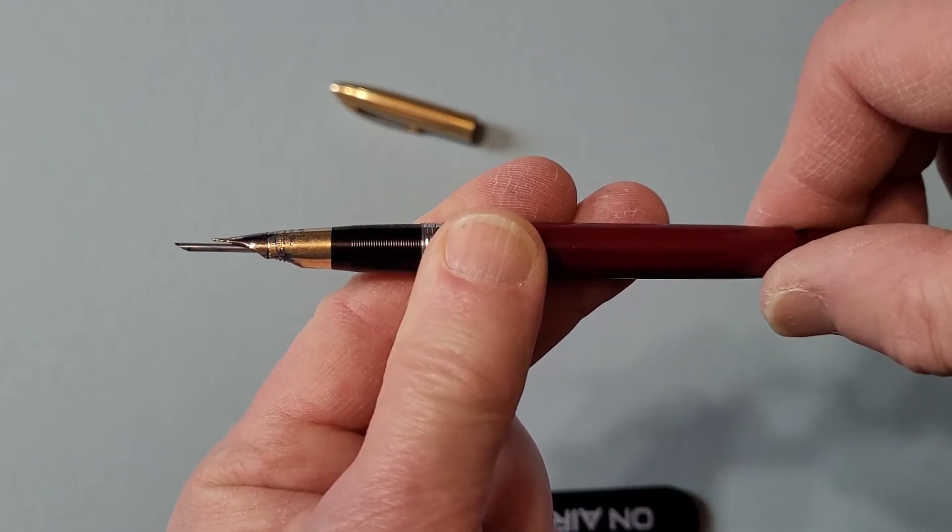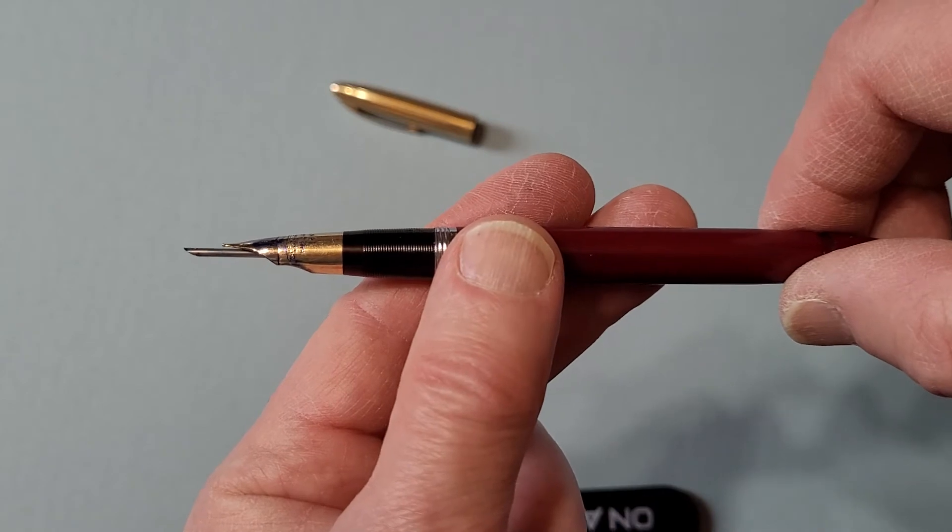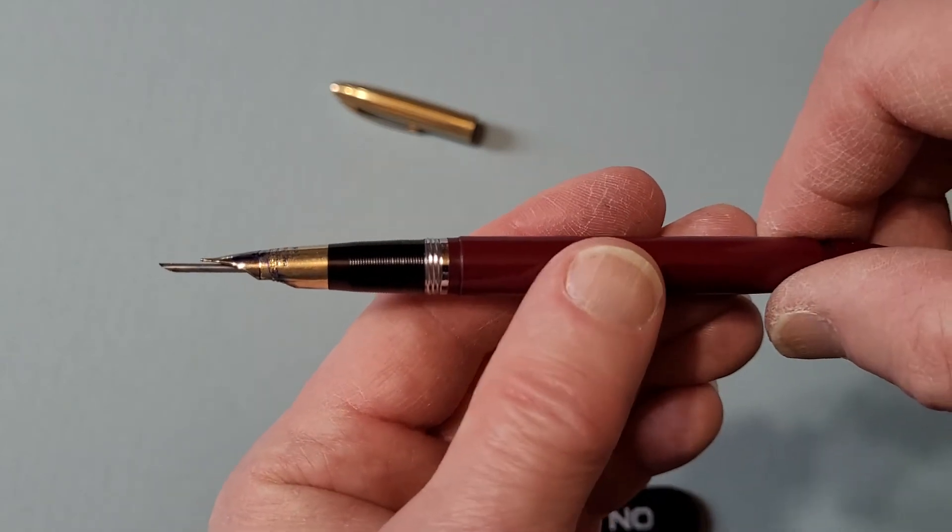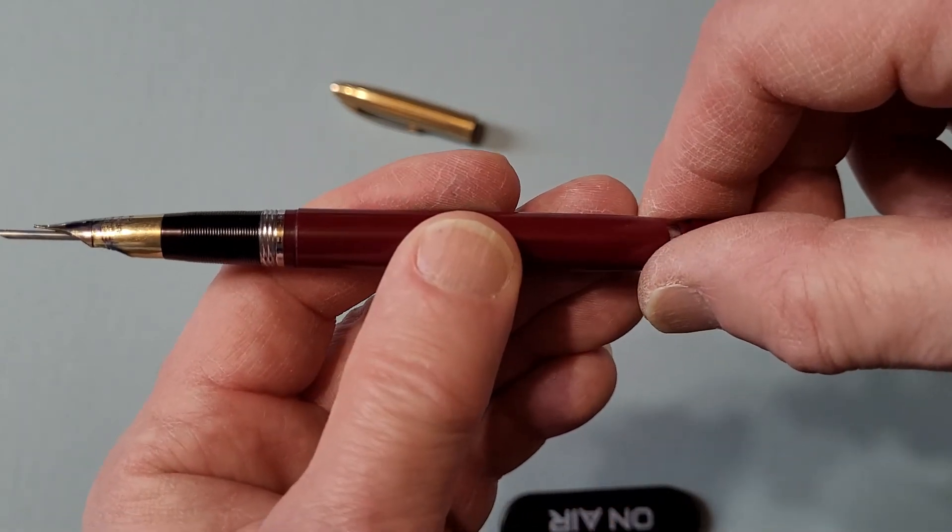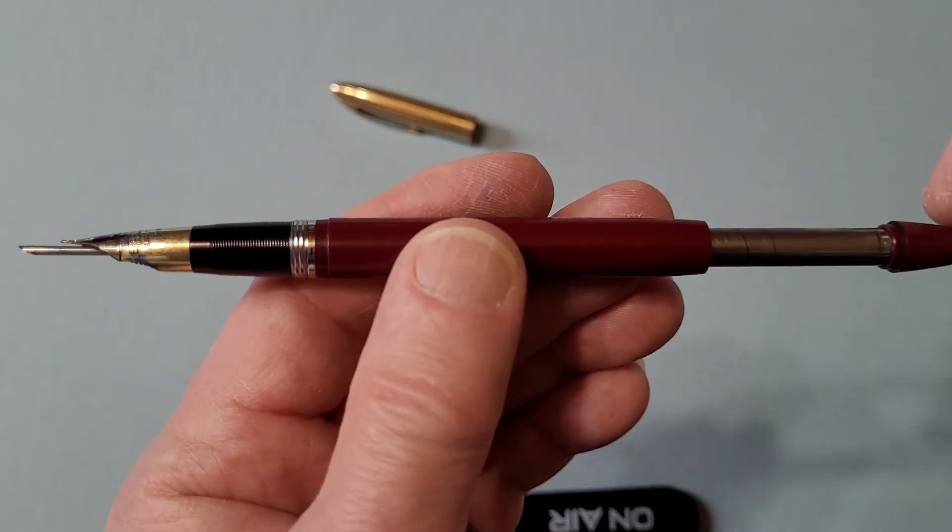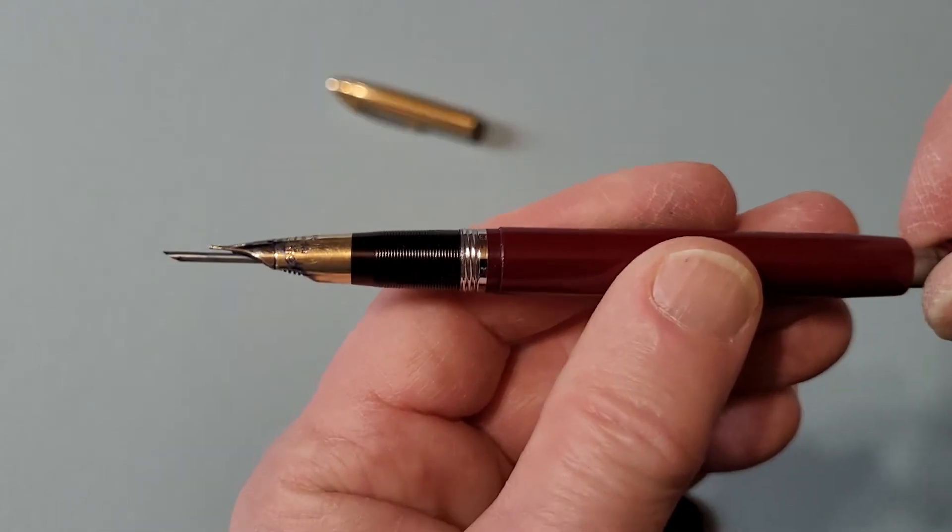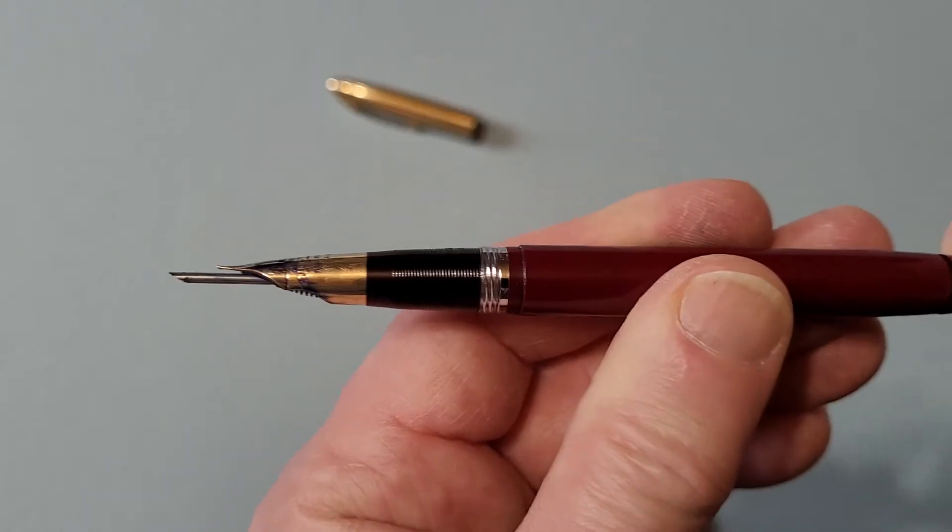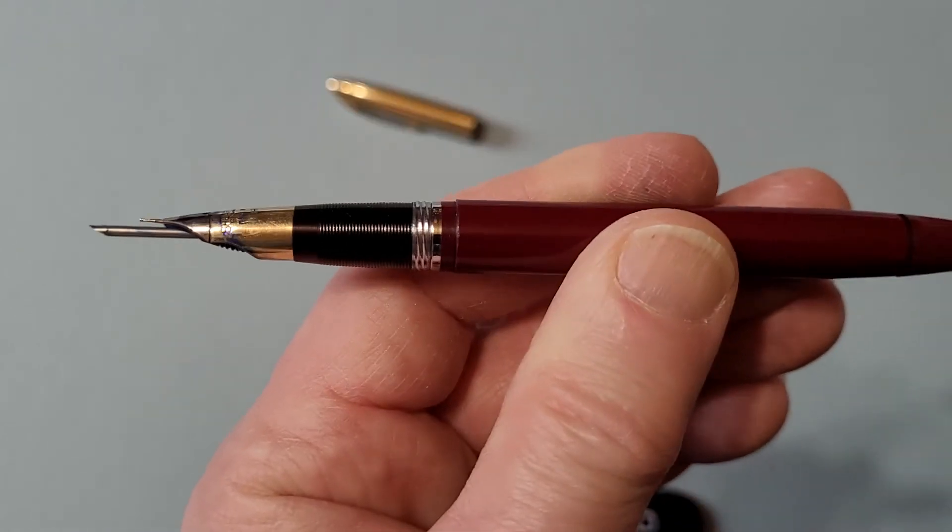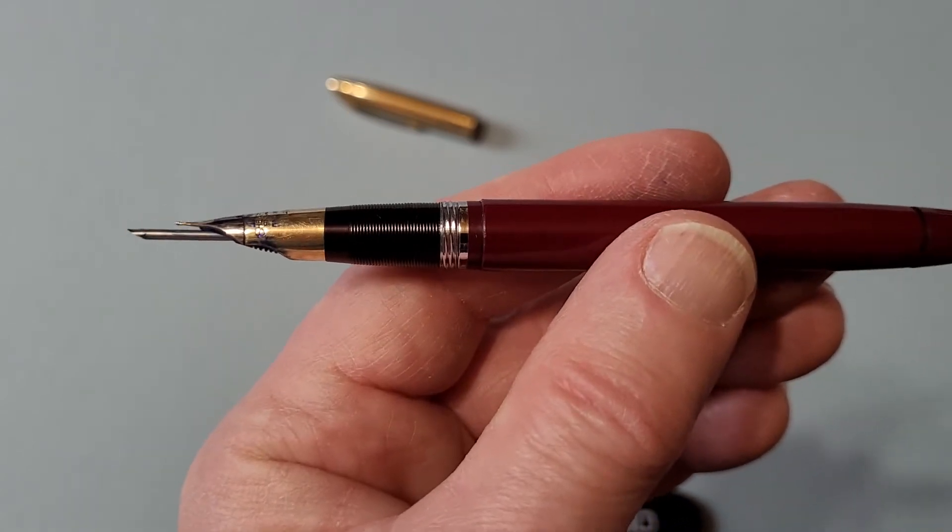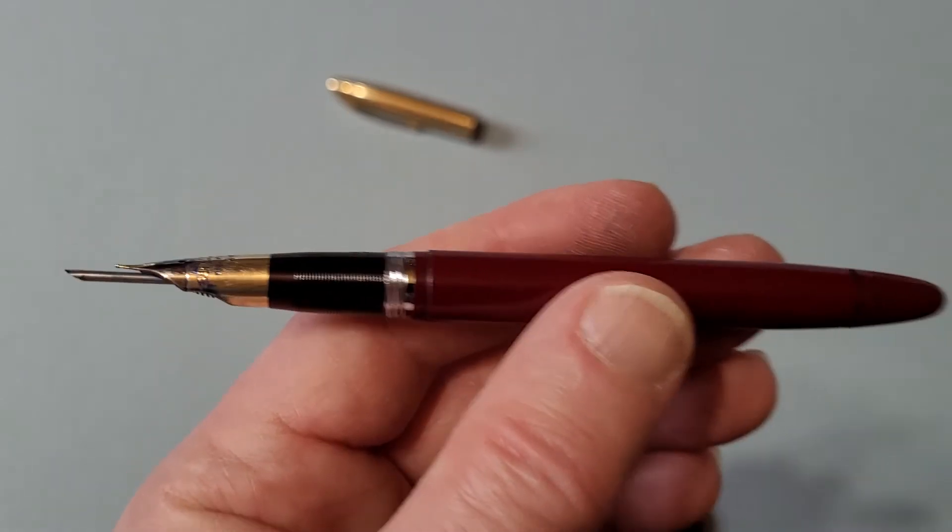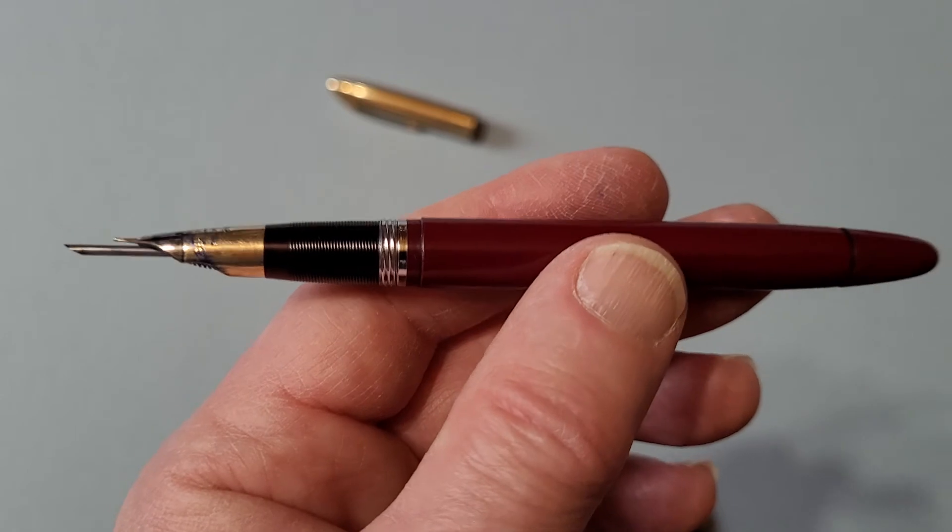And when you're filling the ink, you put the Snorkel in the ink and you pull back on the piston and then you push in. And you get a nice, you can hear the sound when you do that. And then the ink goes up the Snorkel into the body of the pen where there's a latex sack.